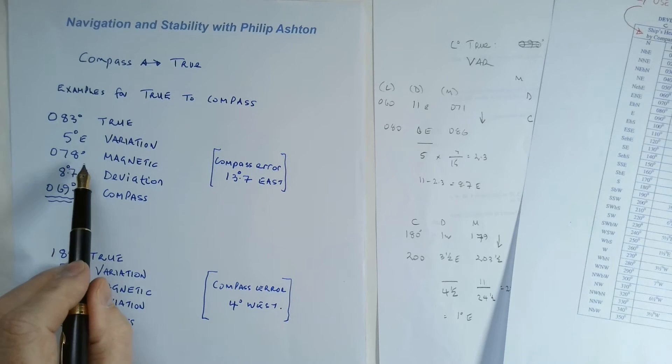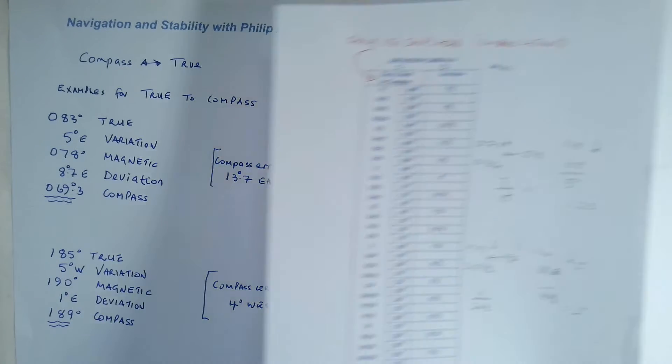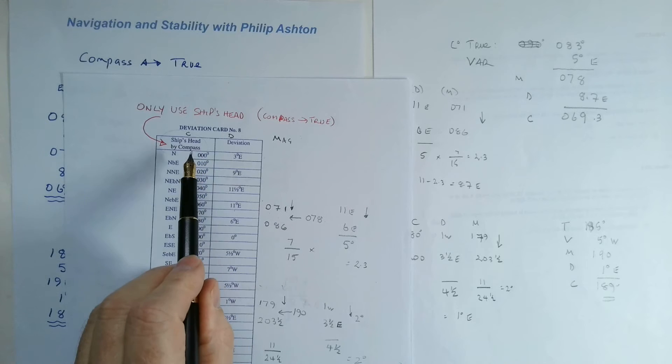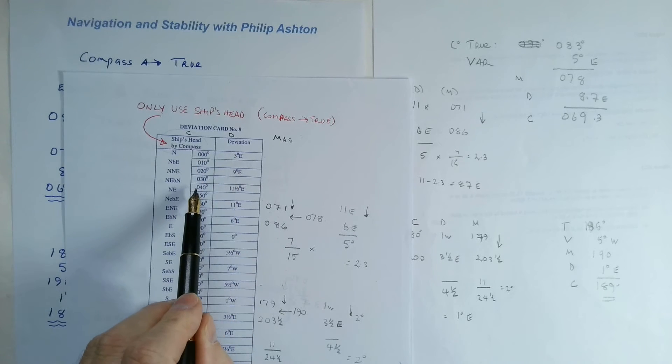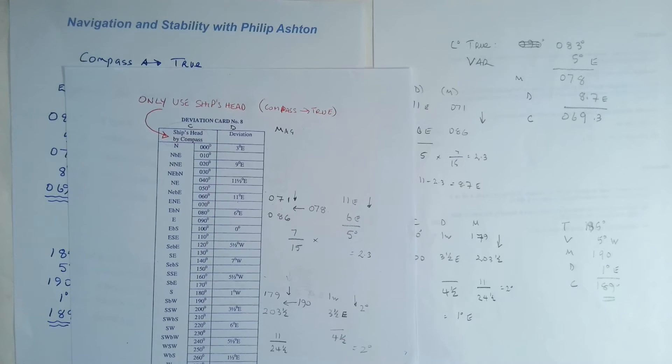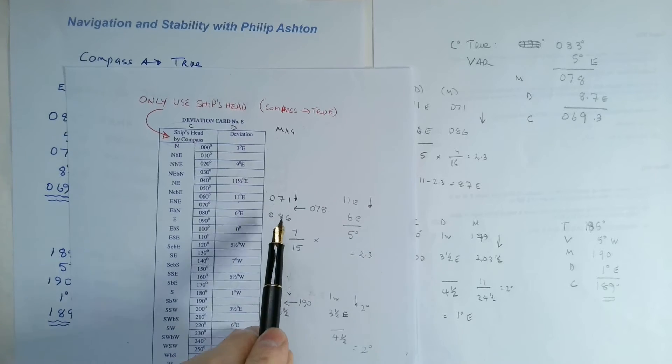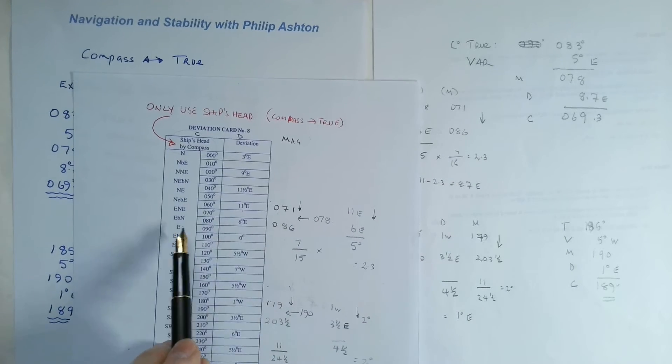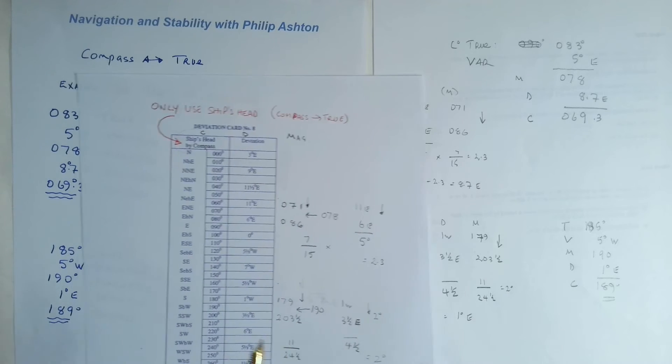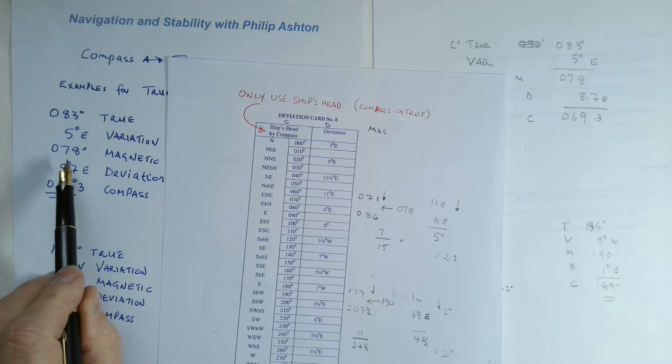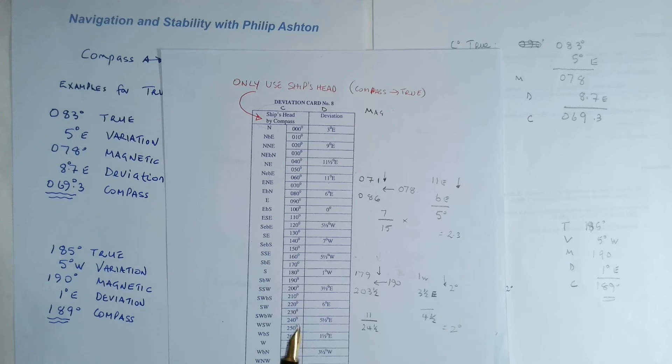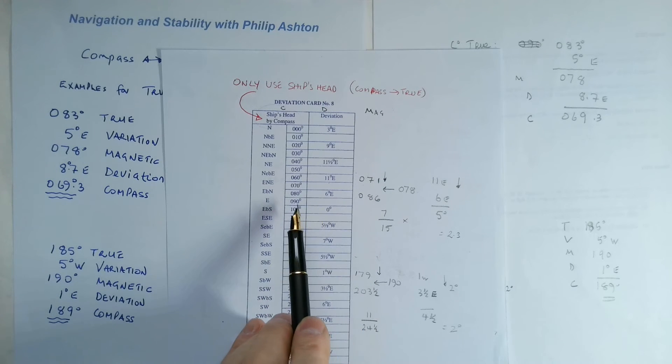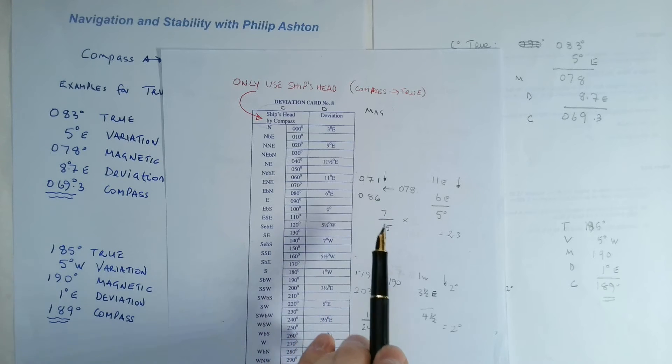And we're left with 078 magnetic. Now when we look at our deviation card, if we apply the deviation to these values we will get our magnetic. So what you have to do is find two values that fall either side of our 078 magnetic. So we've got 060, 11 east, 071, 86 east.